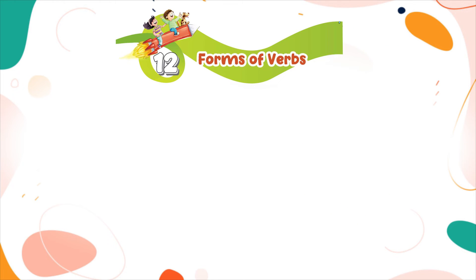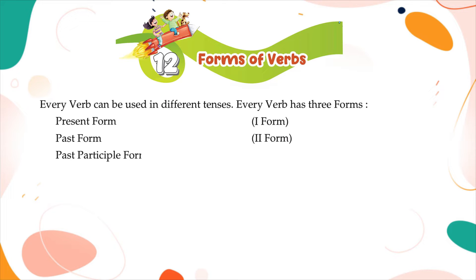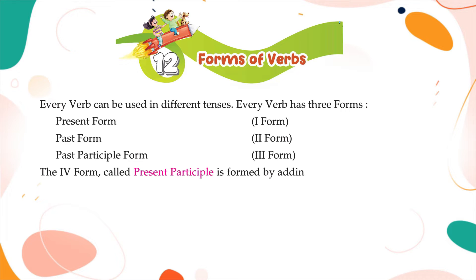Chapter 12: Forms of Verbs. Every verb can be used in different tenses. Every verb has three forms: present form (first form), past form (second form), and past participle form (third form). The fourth form, called present participle, is formed by adding -ing to the present form of the verb.